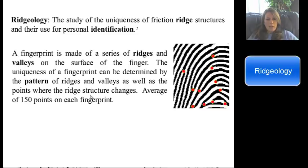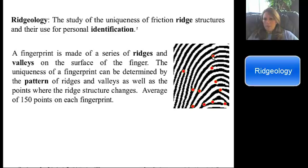When we look at the ridge patterns, on average each fingerprint will have what they refer to as points — so these are 150 points. If you see these red dots — and we'll get into these ridge patterns in just a second — here's a point, so this would be like a fork. Here's another fork. So all of these red dots are points. On any one fingerprint, you could have up to 150 different points.